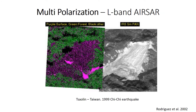The second product is multi or fully polarization. Here is the quite famous Tsaoling megaslide triggered in Taiwan by the Chi-Chi earthquake in 1999, seen through a decomposition of a fully polarimetric L-band SAR image.